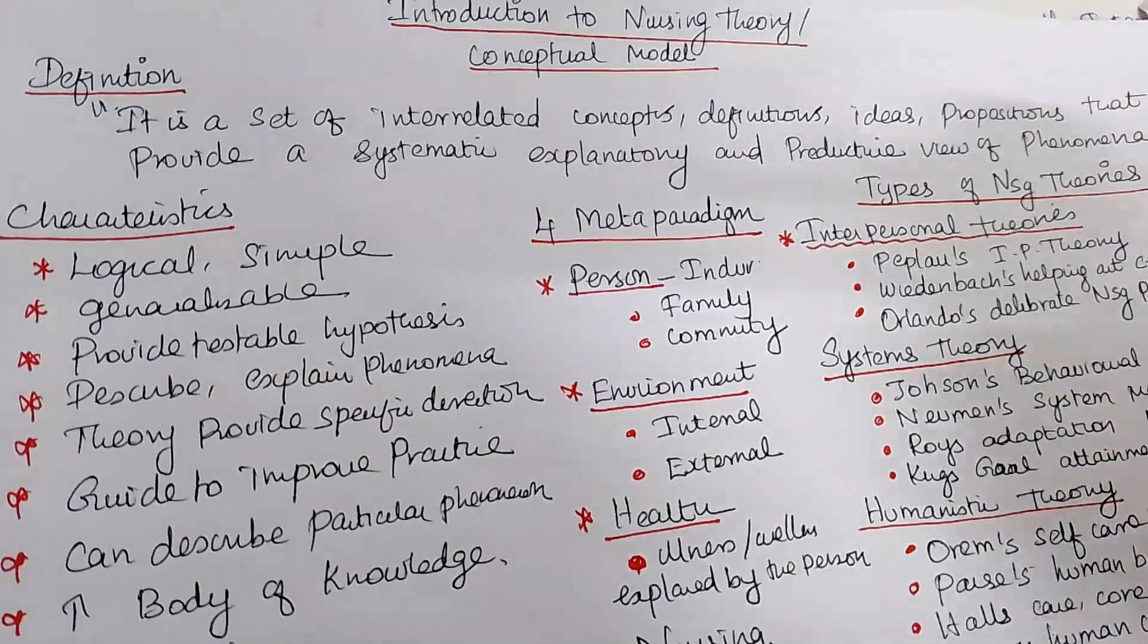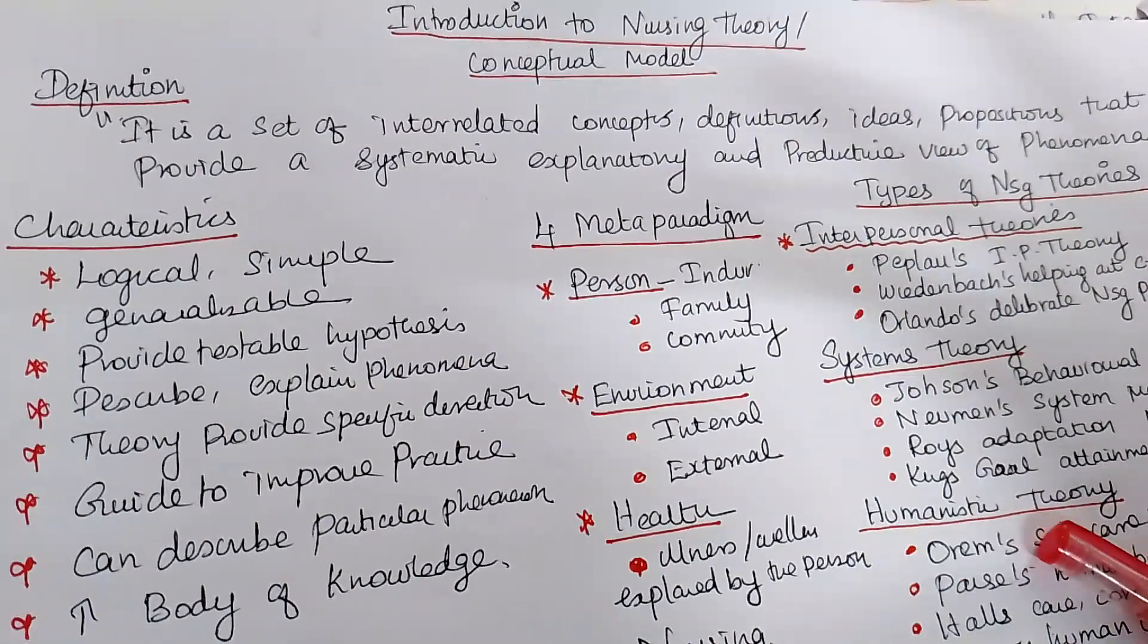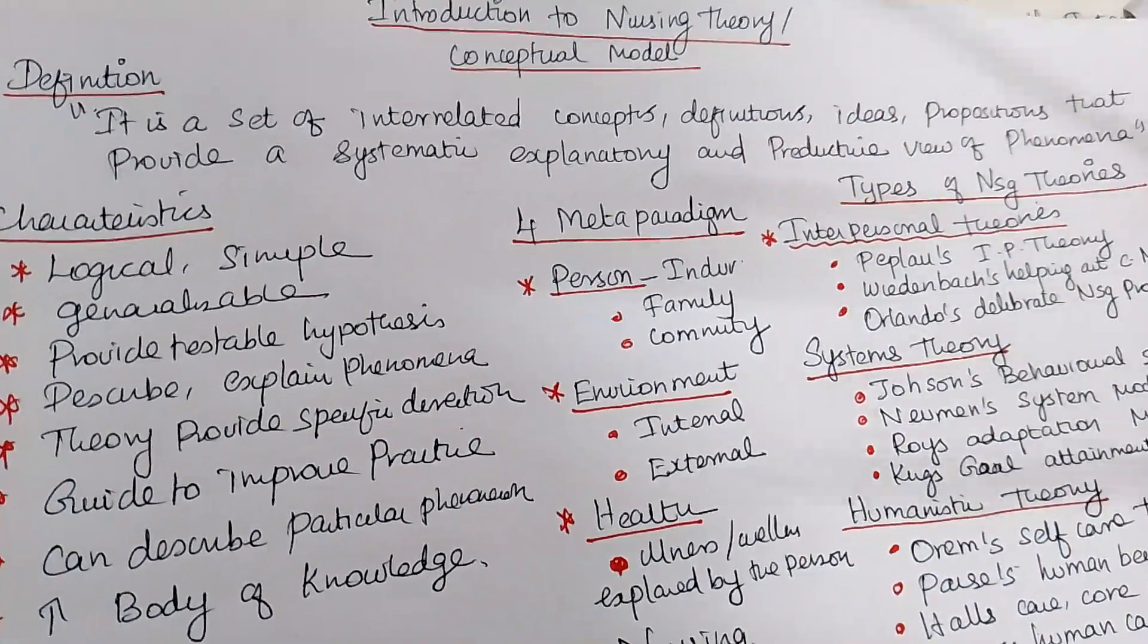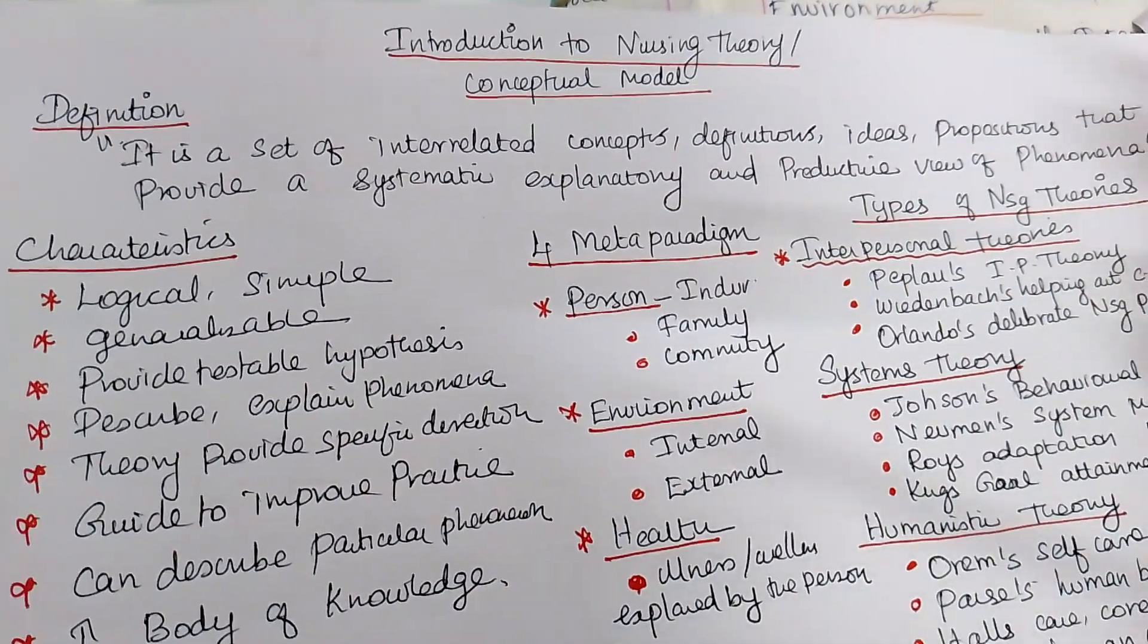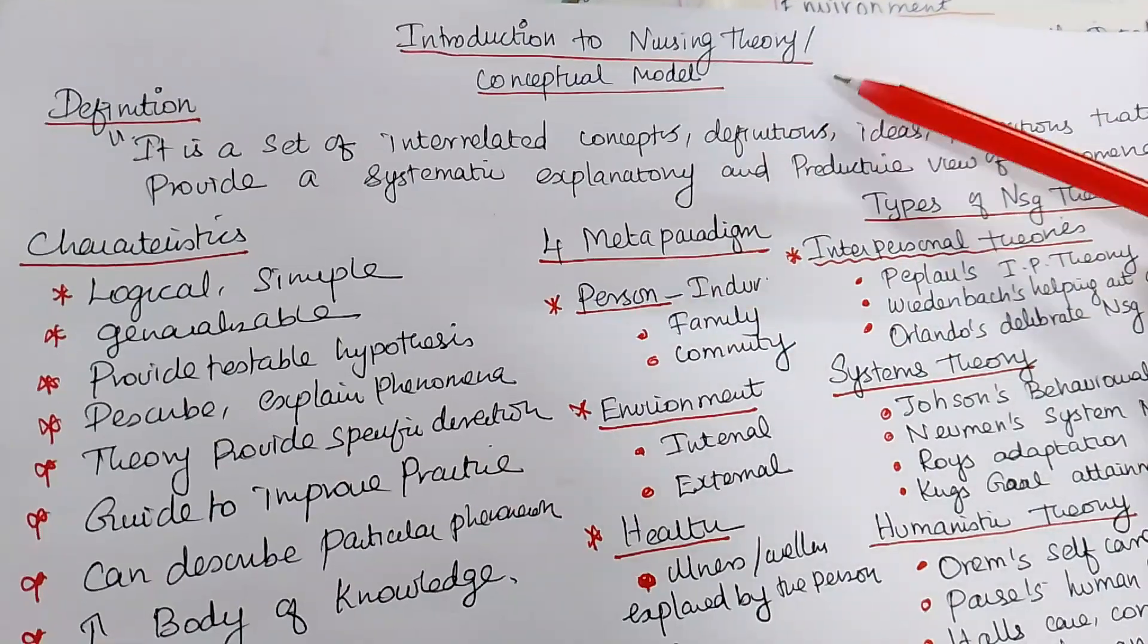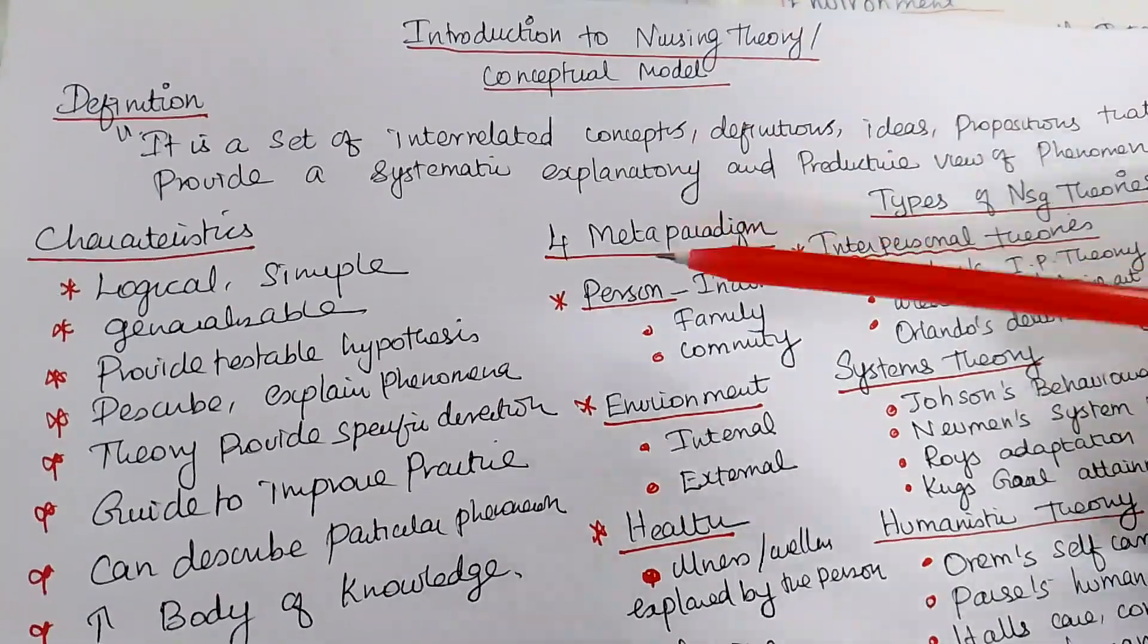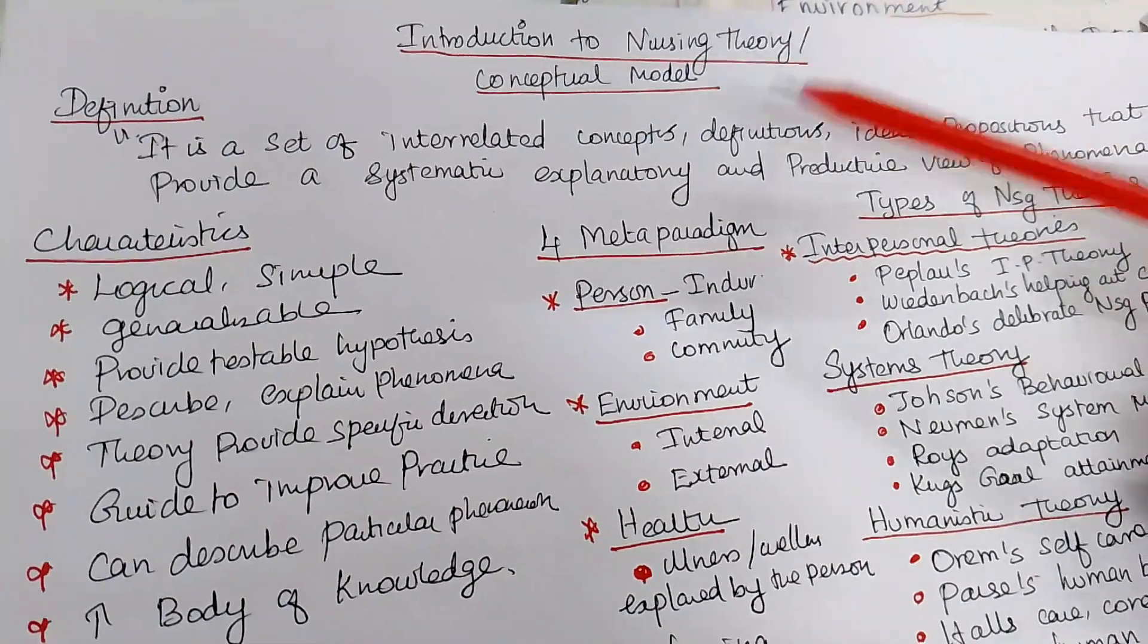It is a set of interrelated concepts, some definitions, some ideas, propositions that will be providing a systematic view of some phenomenon. The theory was existing from the olden days to current days. Right? So Florence Nightingale developed some phenomenon. Then she developed a theory and she put it the environmental theory. Environment is very important.